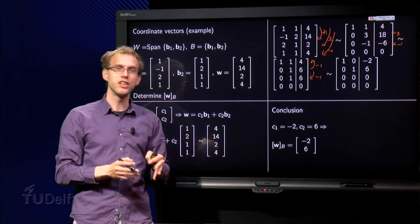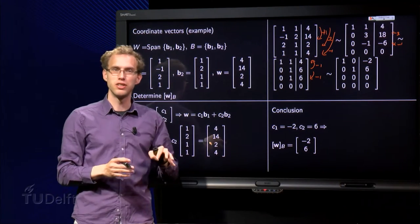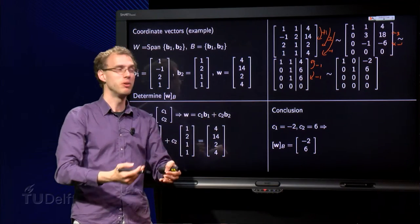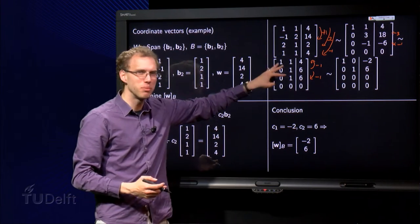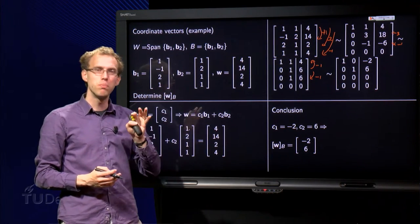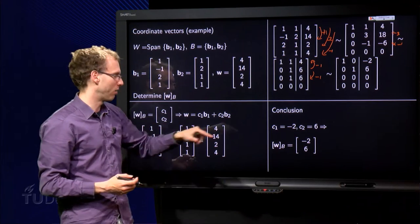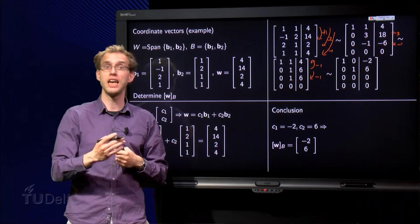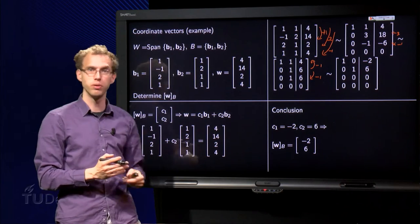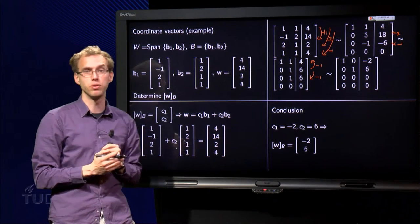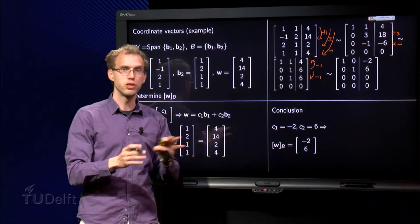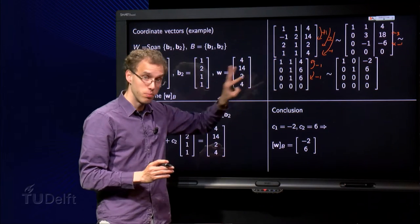So in those questions, usually it is given that small w is in the capital W. That means that if you find some inconsistency over here, you probably made some calculation error. You will always have a solution. If you don't have a solution, that means that the small w is not in the subspace capital W. But in most questions that is the case, so probably then you made some mistake.